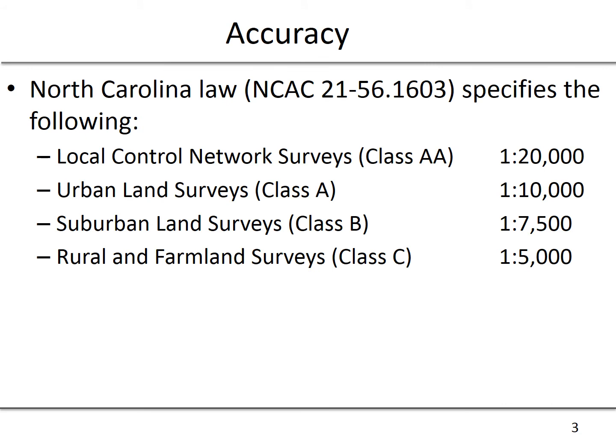It's very important to understand the accuracy of any traverse or surveying work. Most states will have an organization that specifies the minimum accuracy required for particular types of survey work, which can range in North Carolina for example from an acceptable error of one foot for every five thousand feet or at the higher end of the scale only a one foot error in twenty thousand feet.